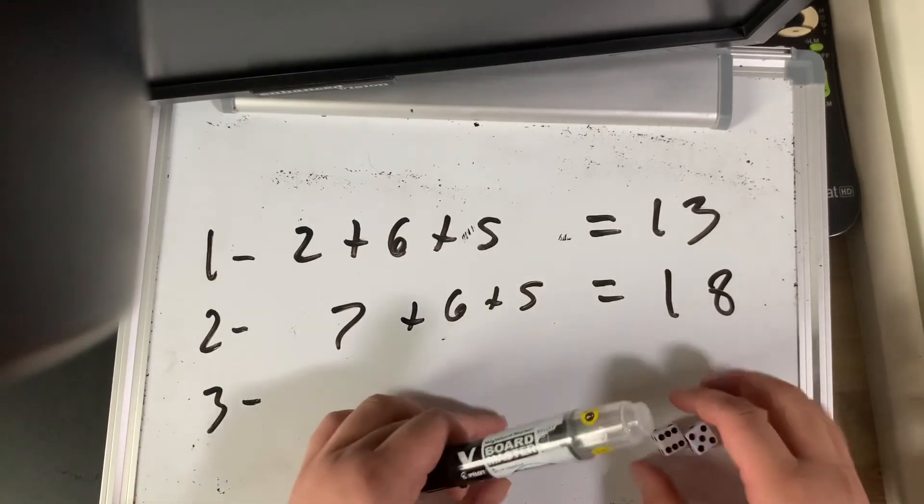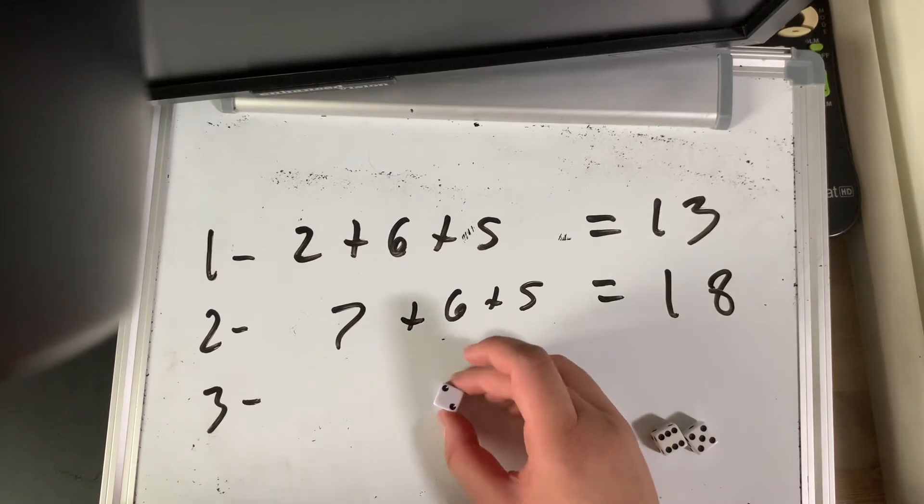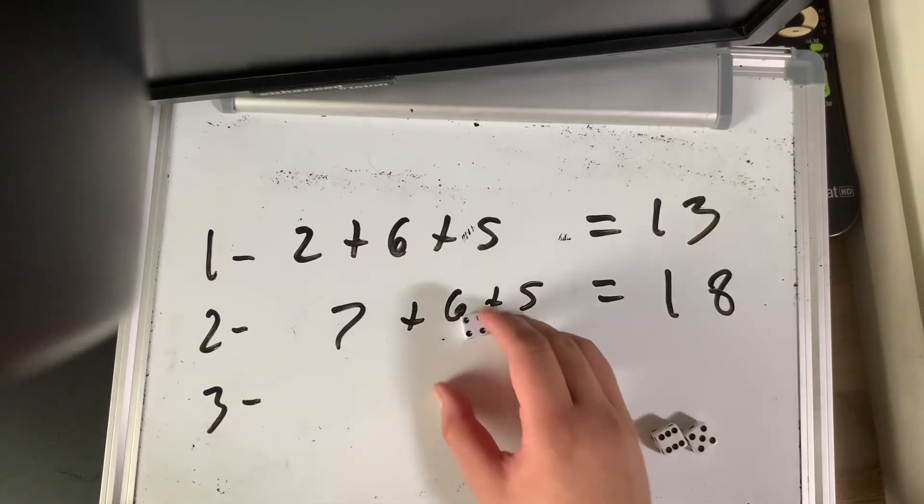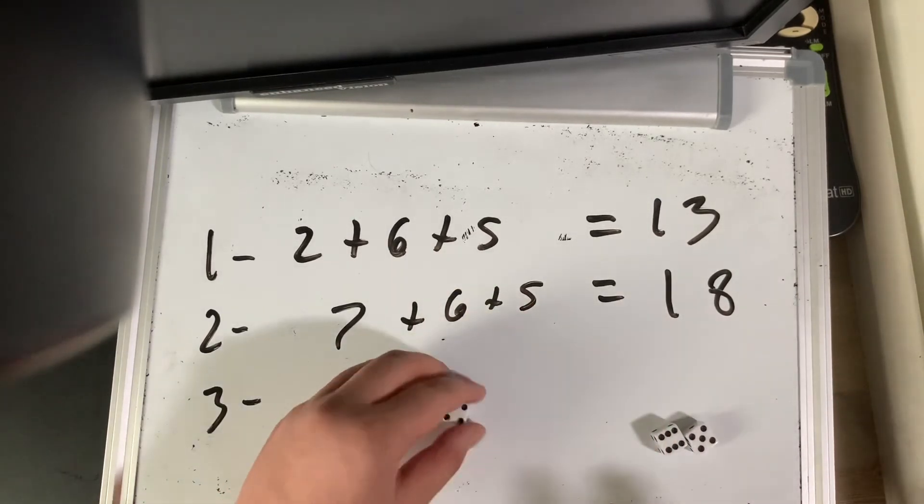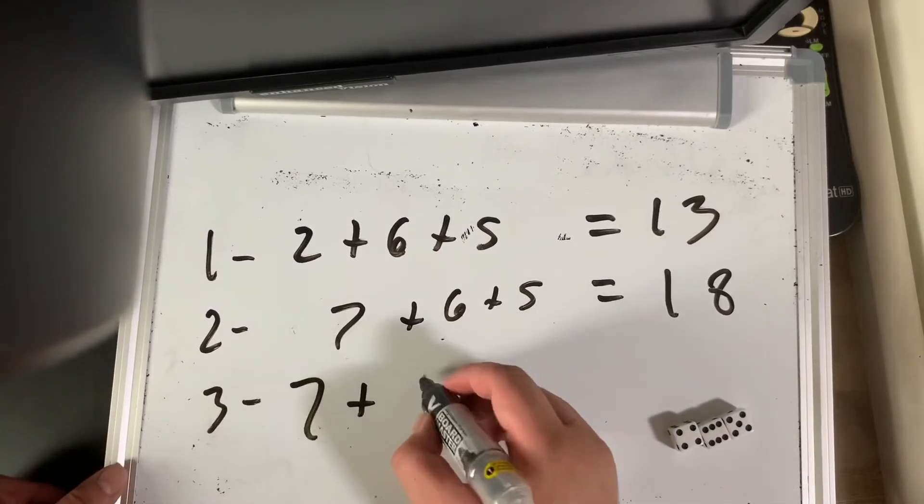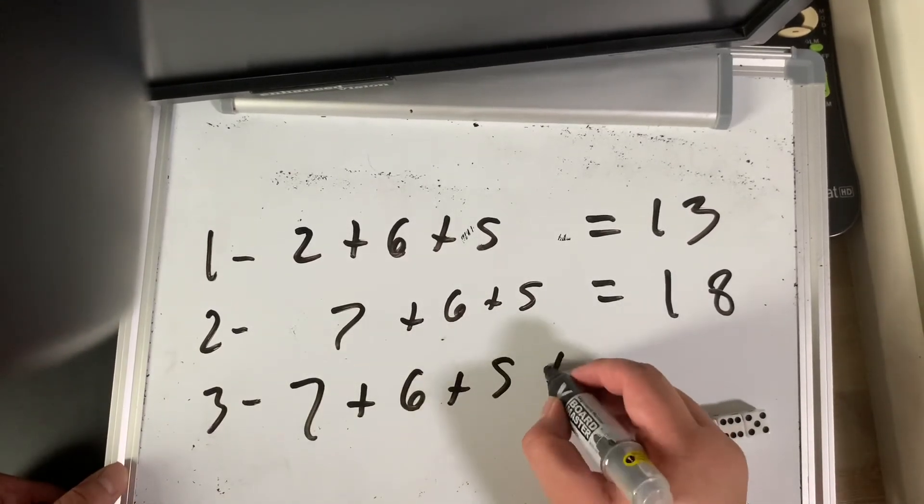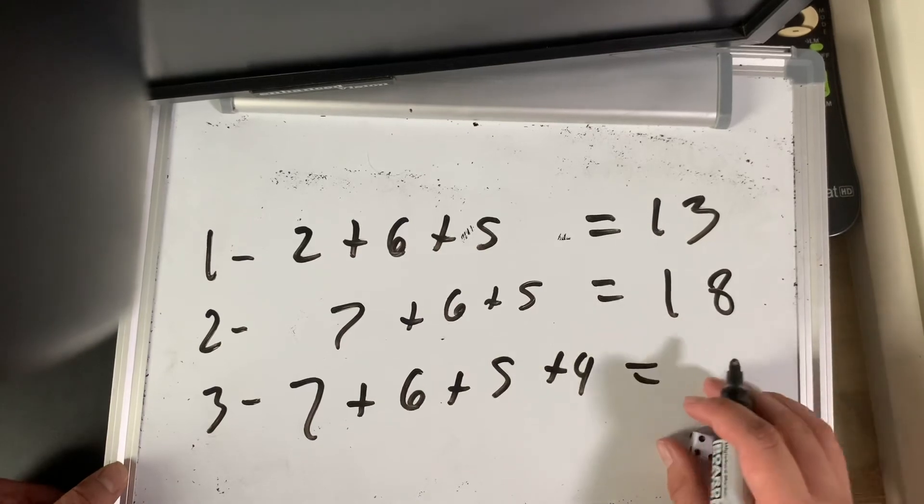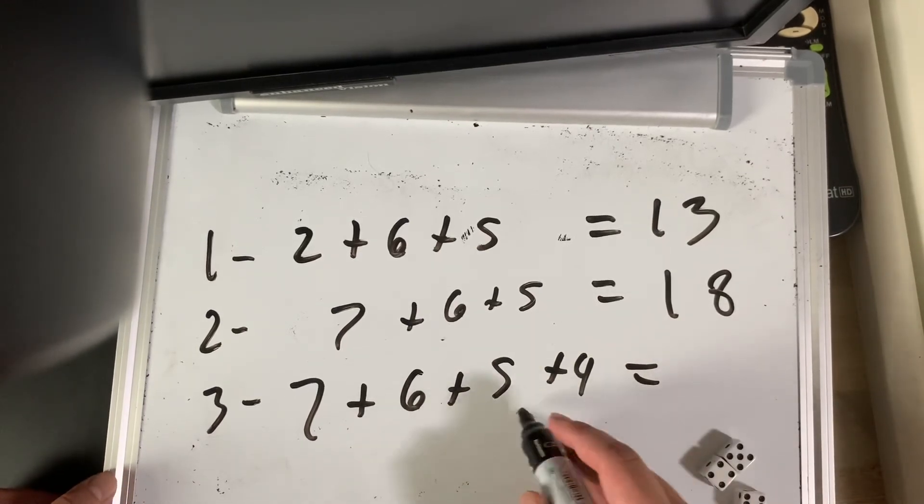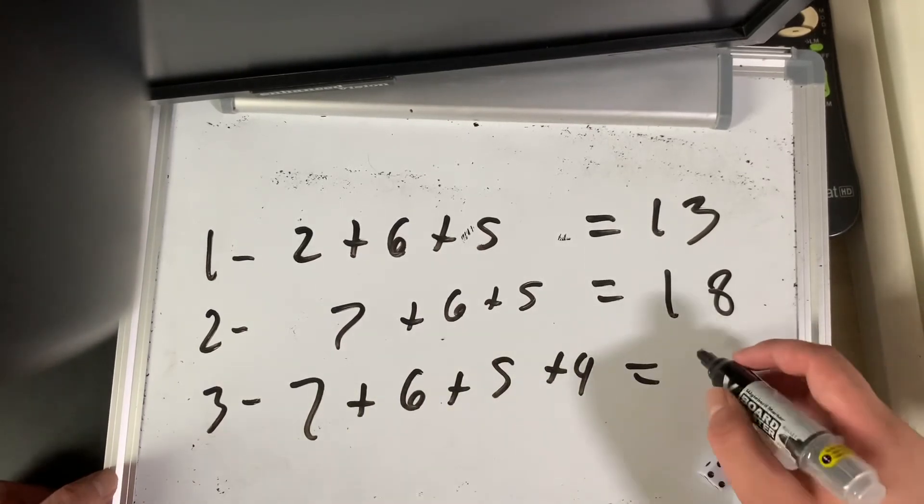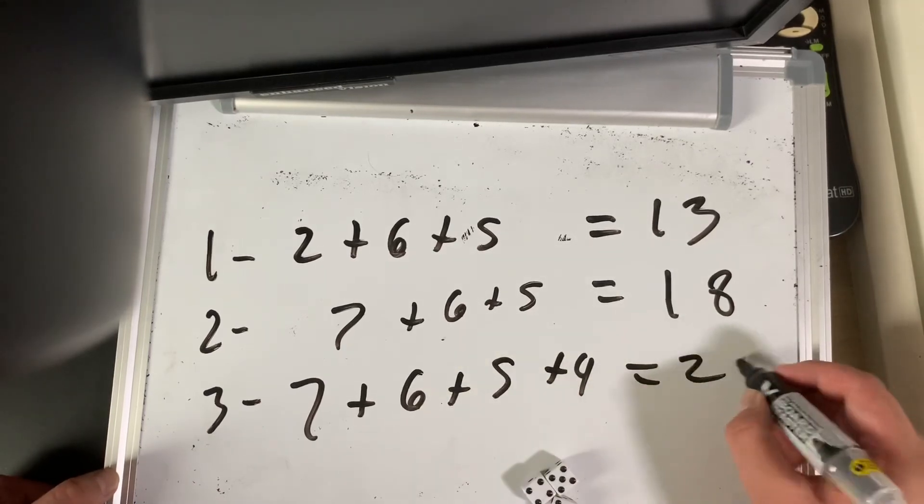And then the one that I took at the bottom of, this one, I'm going to re-roll it. This new value, which is going to be 4, I add it on. 7 plus 6 plus 5 plus 4 is equal to 6 plus 4, 10, 10 plus 5, 15, 15 plus 7 is going to be 22.